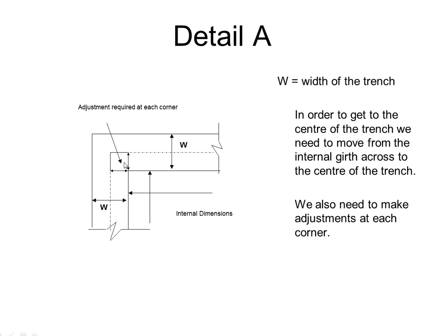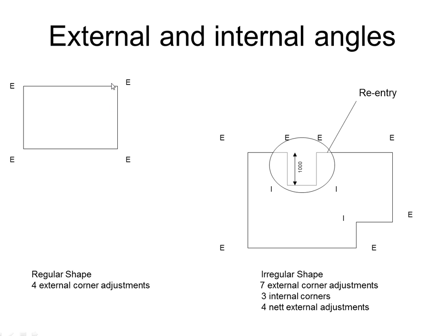If you look carefully, you'll see there are two adjustments at each corner. In a regular shape, we have four external corners. In this particular irregular shape, we have seven external corners and three internal corners. We also have what we class as a re-entry. So in a regular shape, we still have four net external adjustments, because we have seven externals minus three internals, giving us four net adjustments.